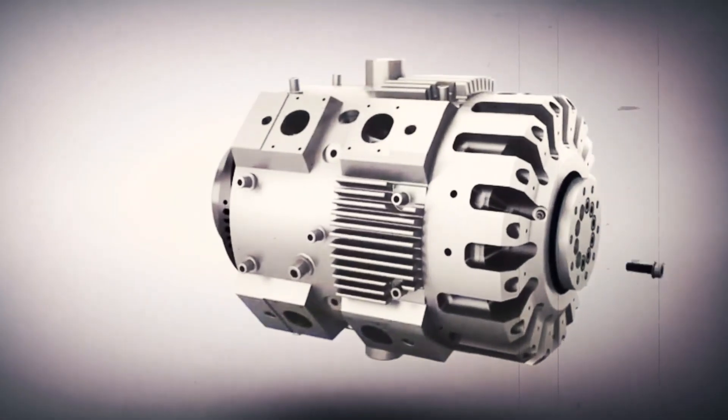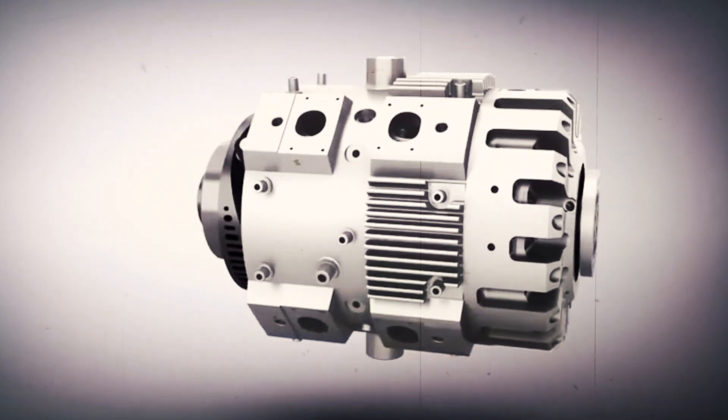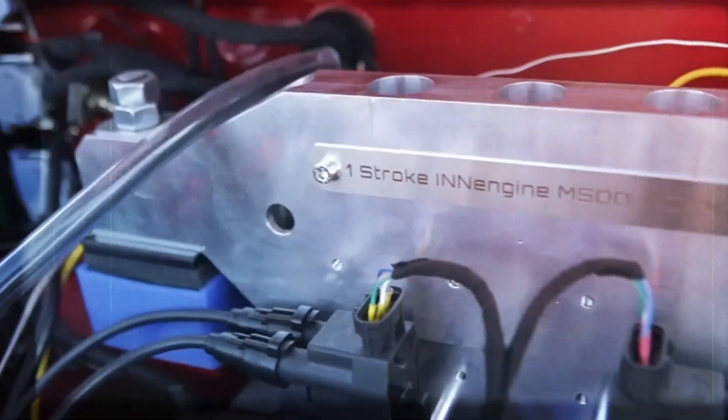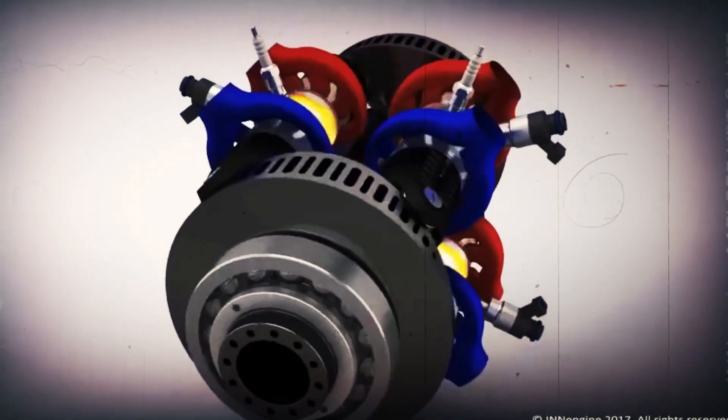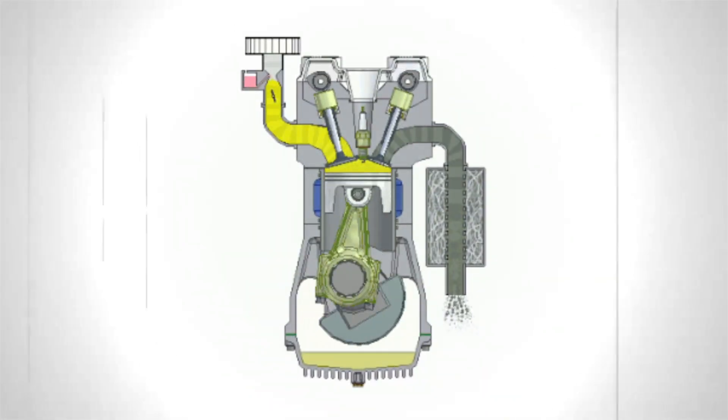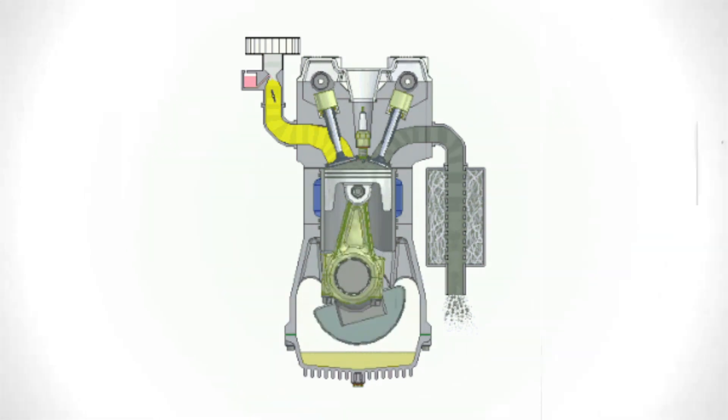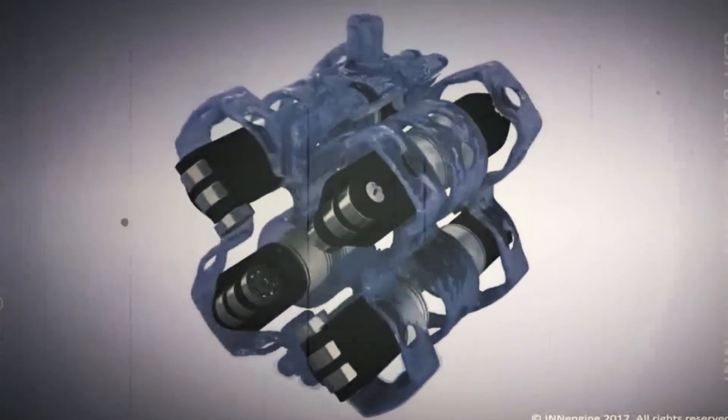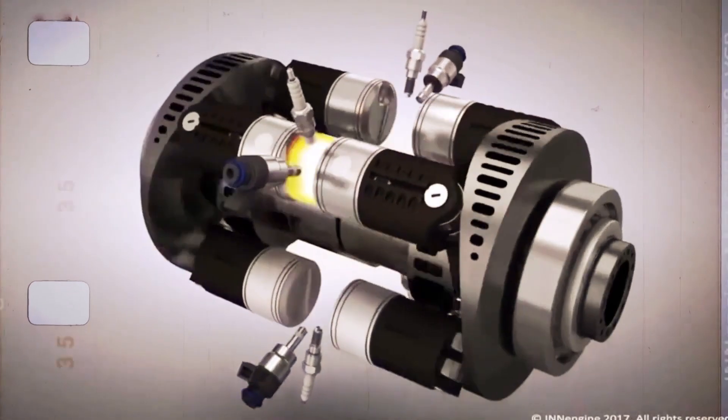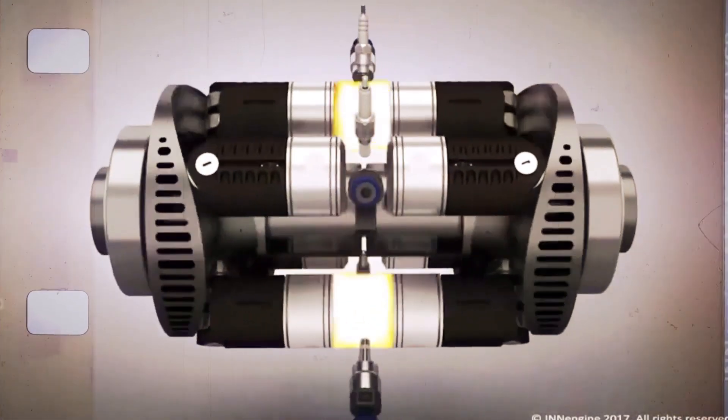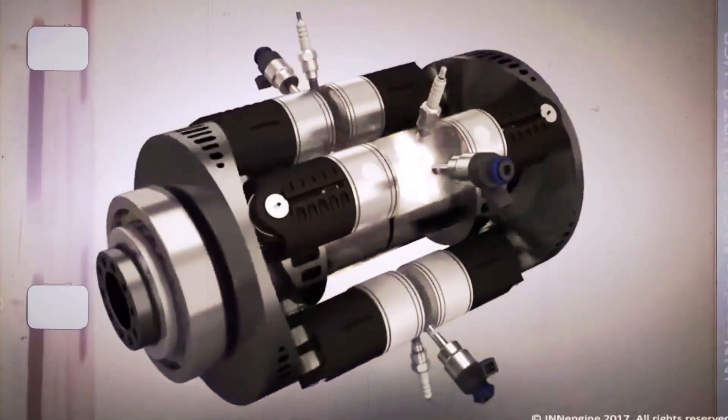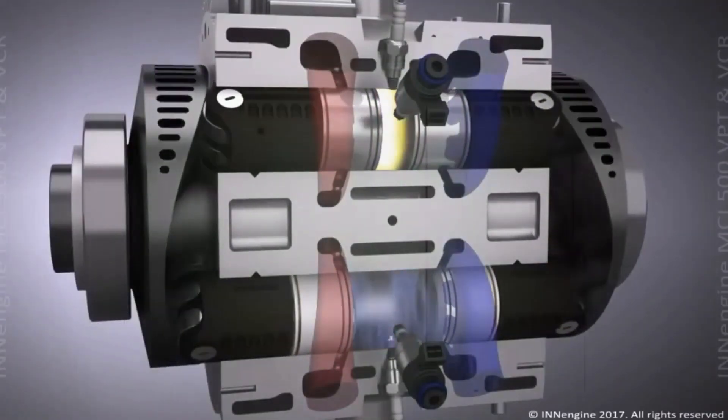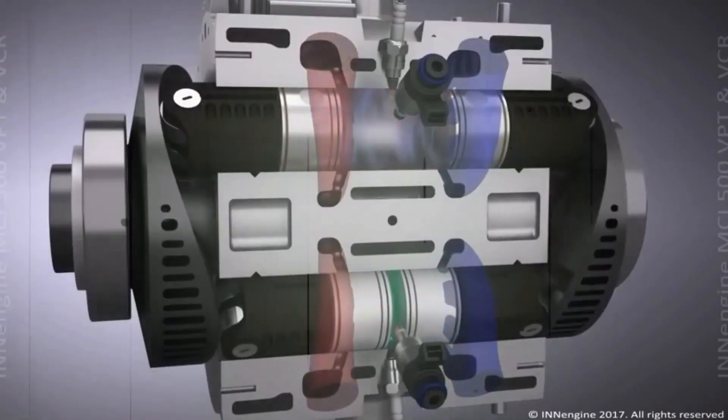The term one-stroke may capture attention as a marketing gimmick, but what genuinely warrants attention is the INN engine's opposed-piston architecture, which provides a significant boost in efficiency. Unlike traditional engine layouts, where the combustion chamber sits above the piston, the opposed-piston design situates pistons on either side of the combustion chamber. This arrangement enables a more effective absorption and conversion of combustion energy into usable work and torque, giving the opposed-piston design a clear edge in efficiency over its traditional counterparts.